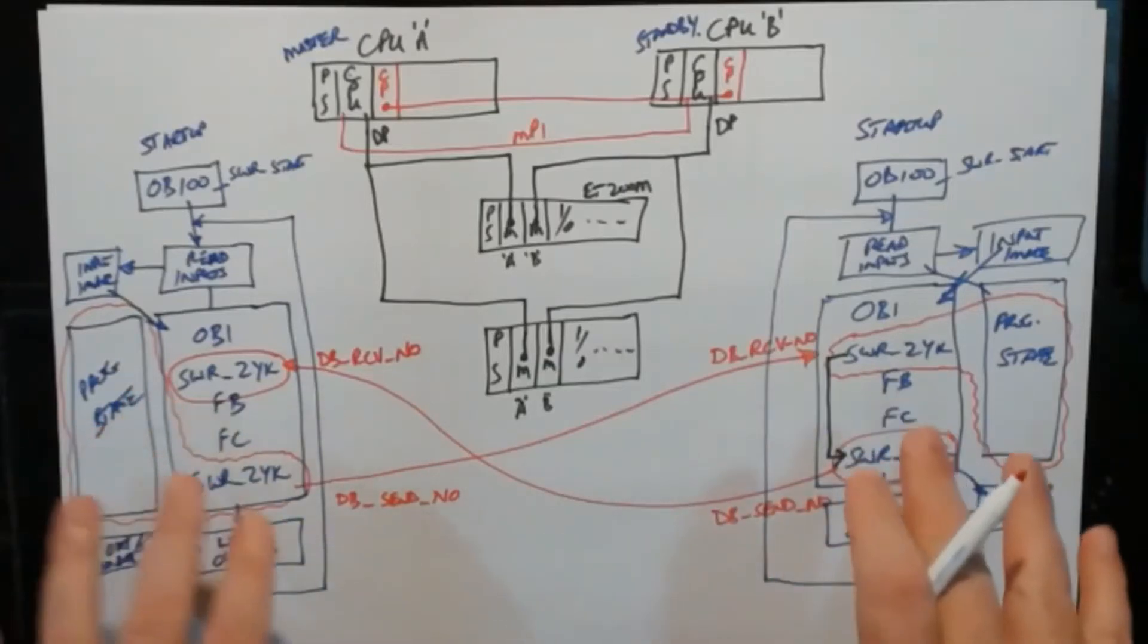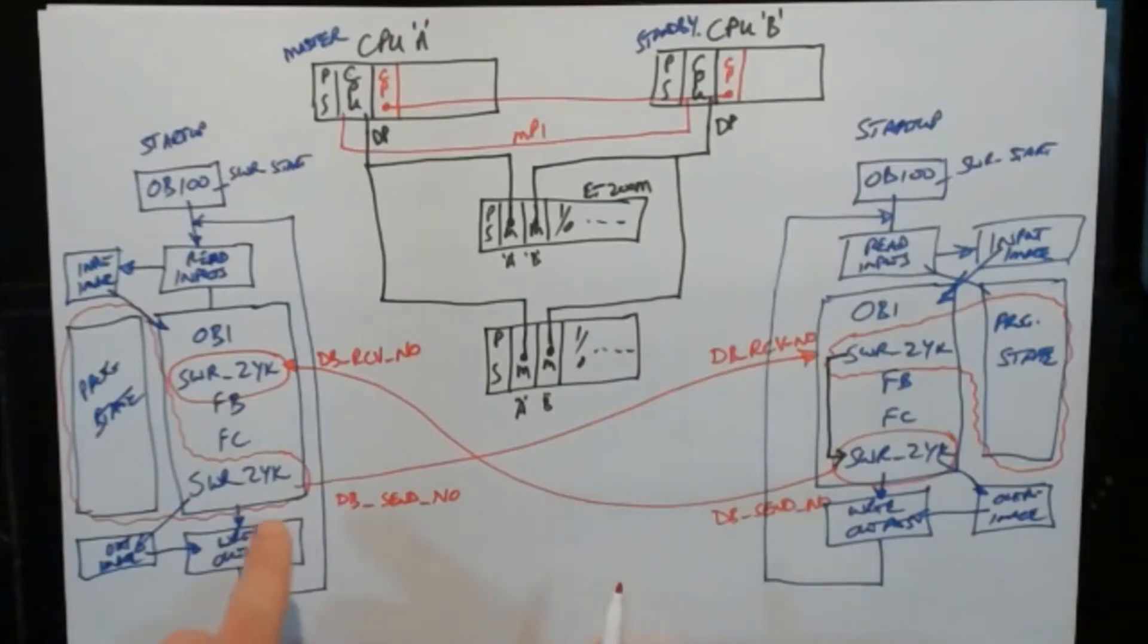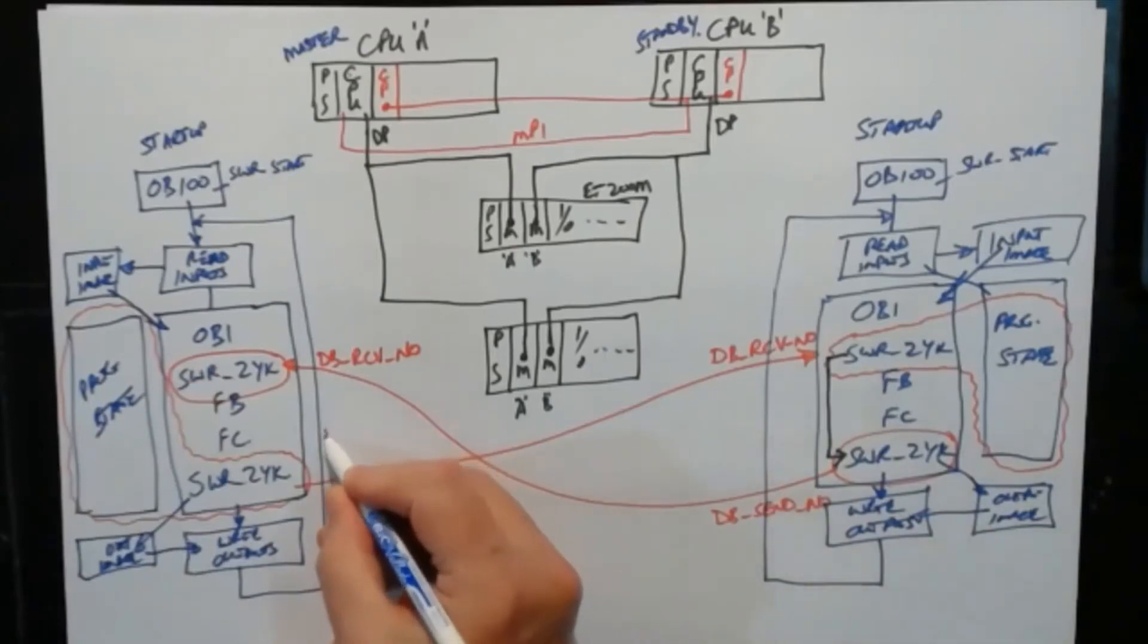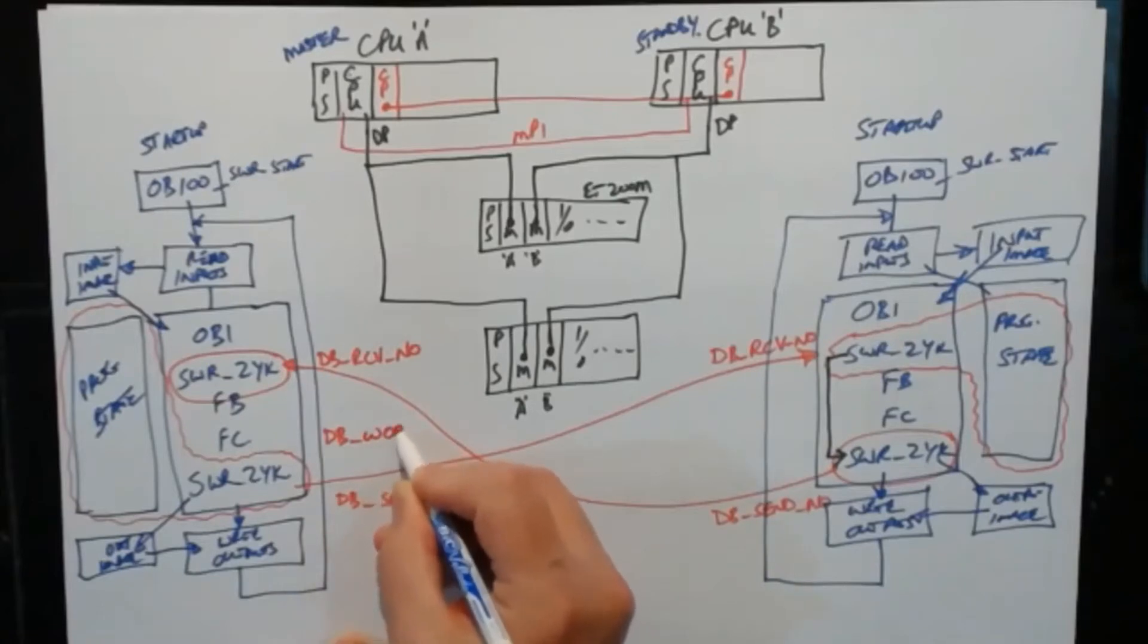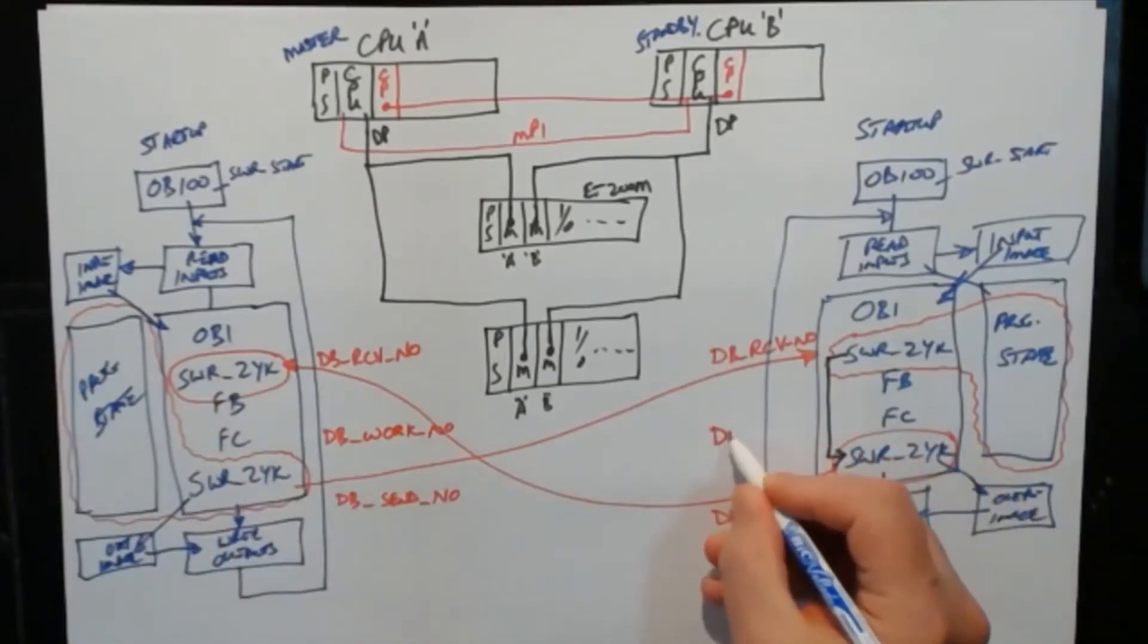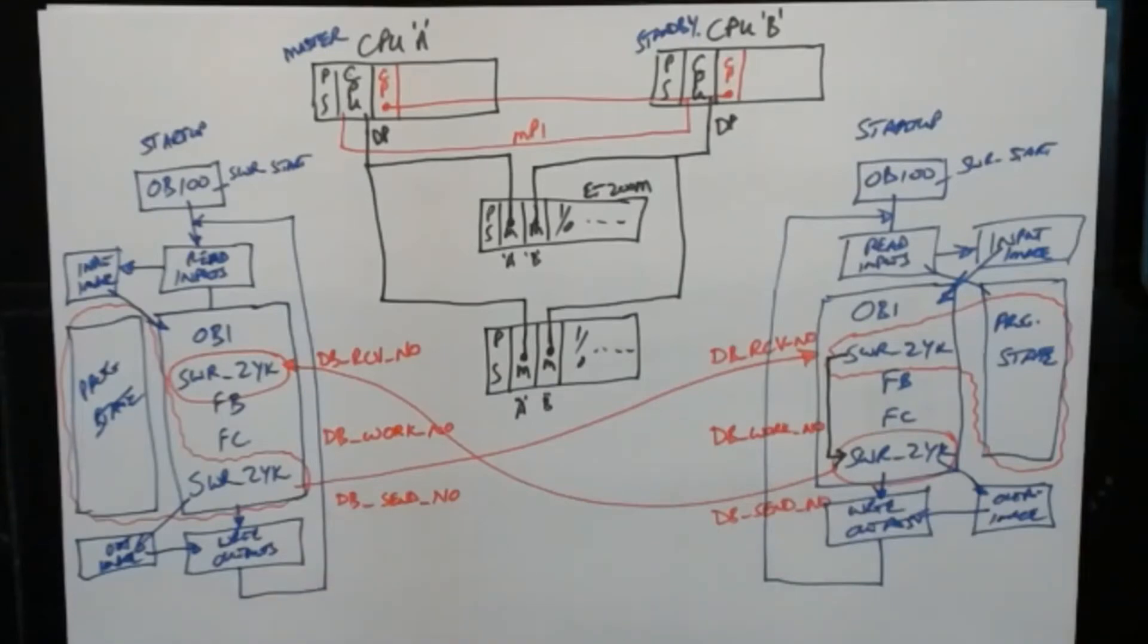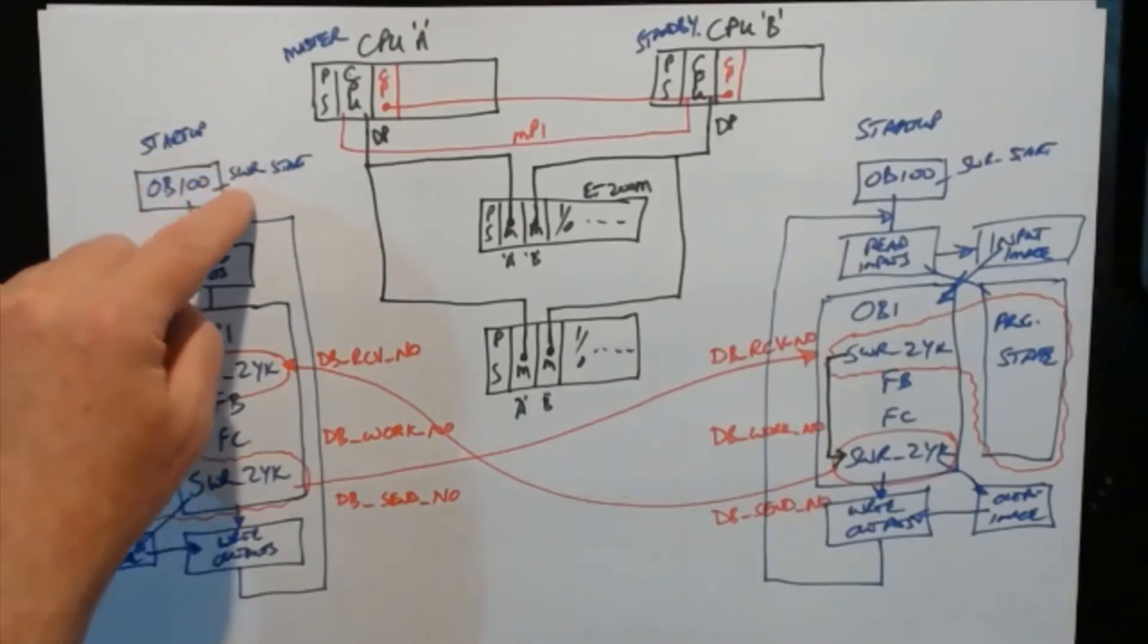There needs to be some control of what's going on and the way the control happens is there's a working DB that records the process of all these transfers, also all done by these two blocks. And that DB's name is DB_WORK_NO and that keeps track of the data processing, and the same DB on the other side, DB_WORK_NO. These DBs remain the same, and in your PLC you actually don't want these to be part of the project. They are created, these three DBs, and there's two more which we'll talk about later.